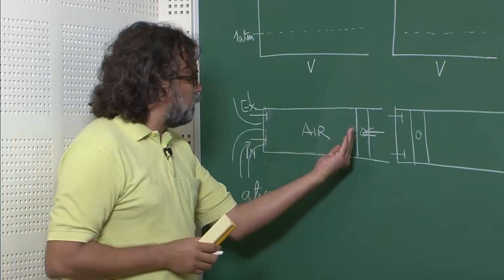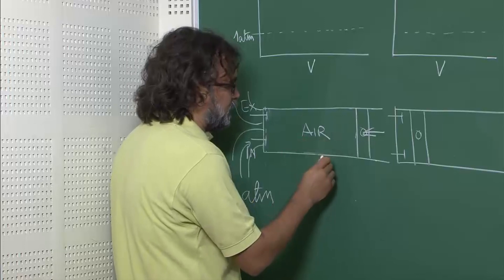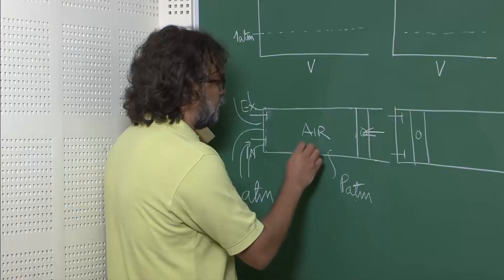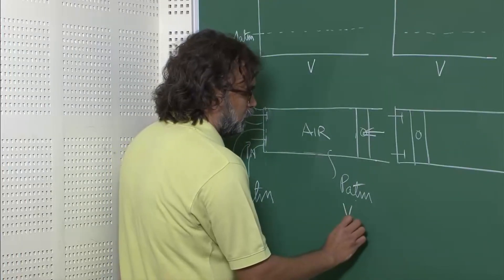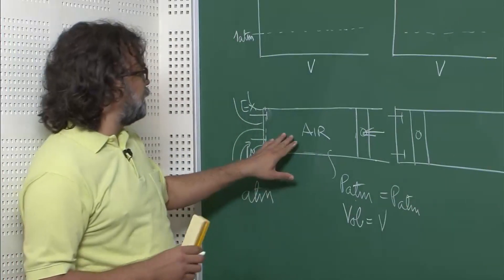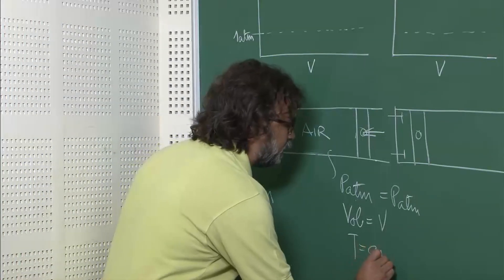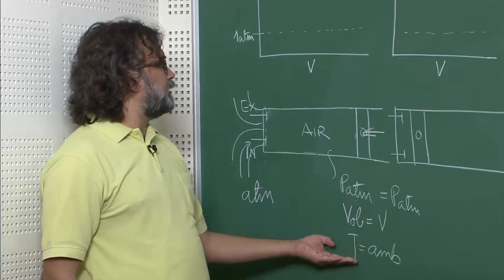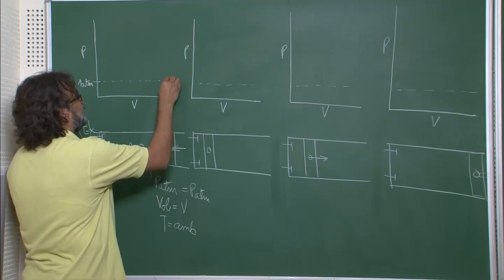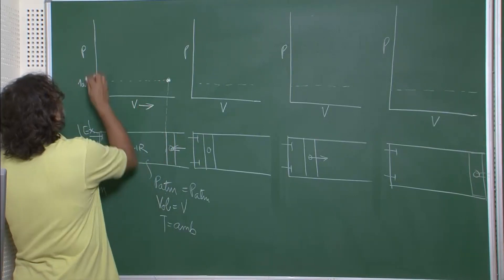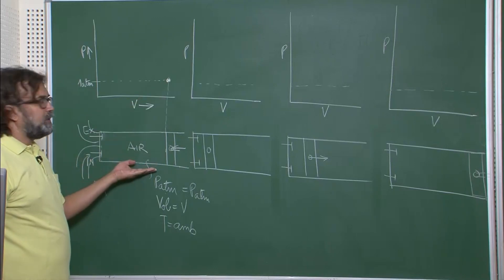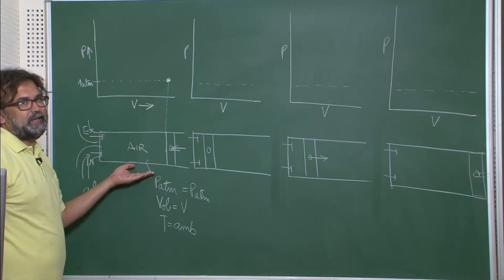Now, what is the pressure? At this position, the pressure is nearly P-atmosphere, there is a certain volume V, and temperature T equal to ambient. This is the initial condition, represented at a point on the P-V diagram, where the V-axis and pressure axis intersect at one atmosphere. We are now ready to begin the thermodynamic process — we are ready to compress this air.